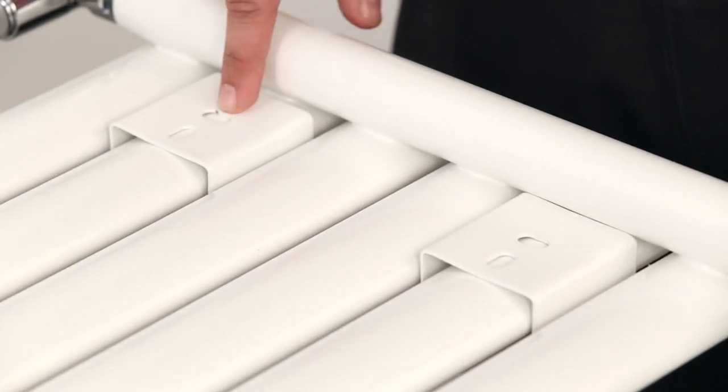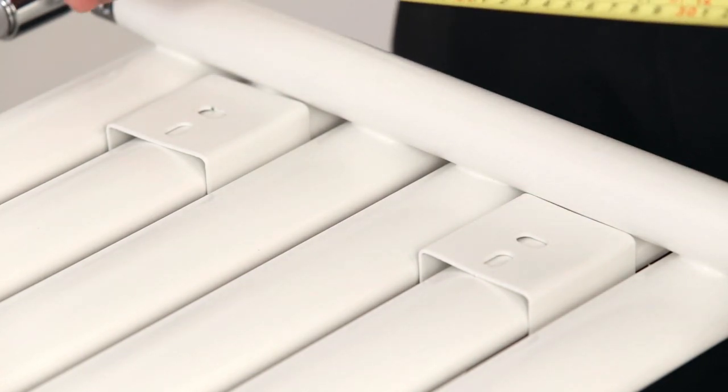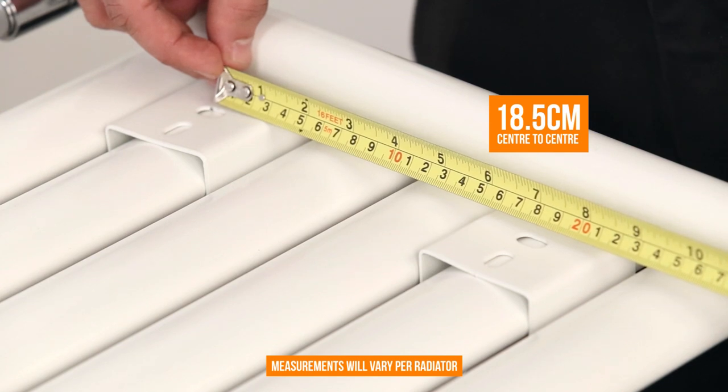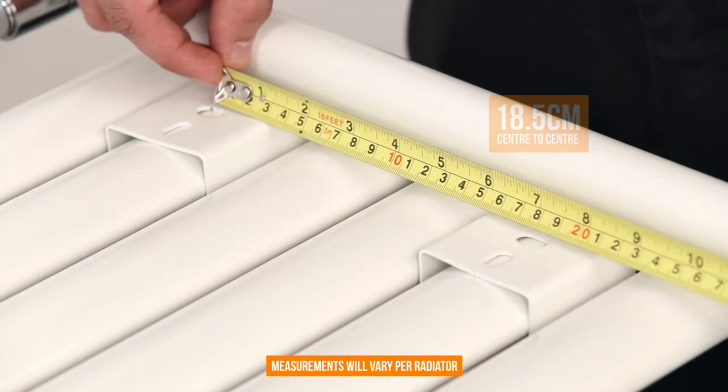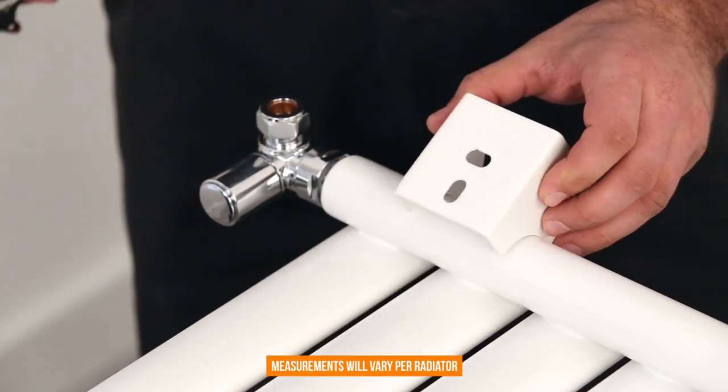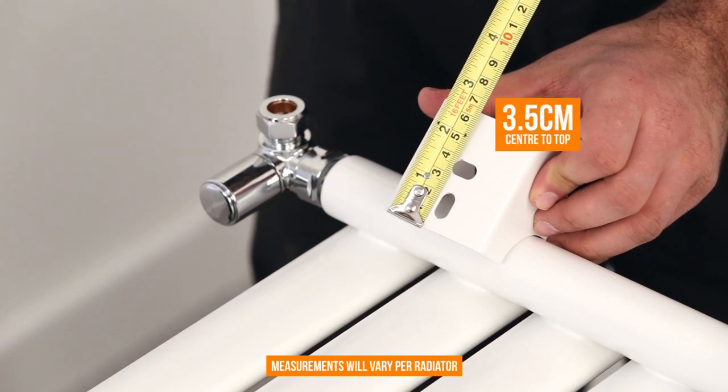Place the bottom brackets on the radiator and measure the centre of one bracket to the centre of the other. Now, position the bracket on the bottom in the same position and note the distance from the bracket centre to the top of the bracket.